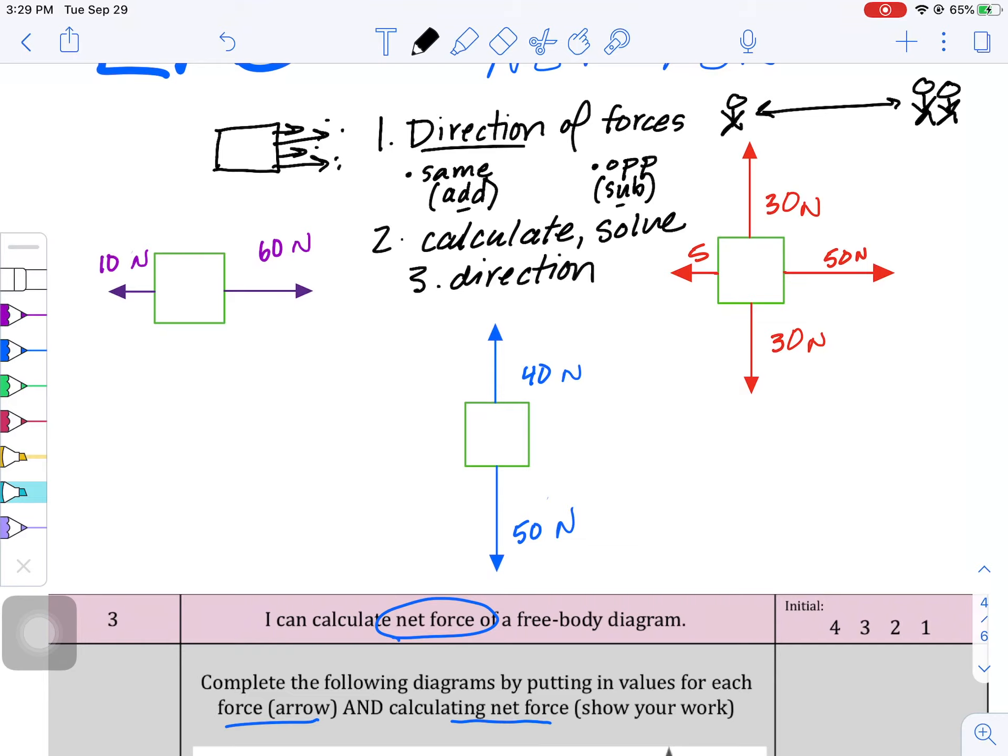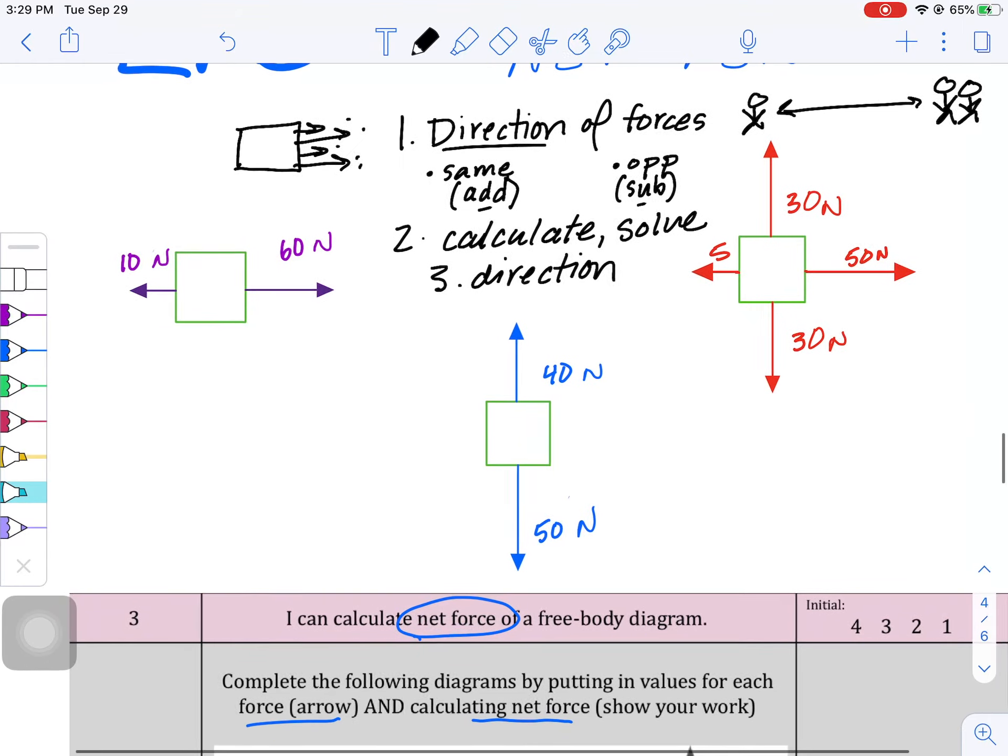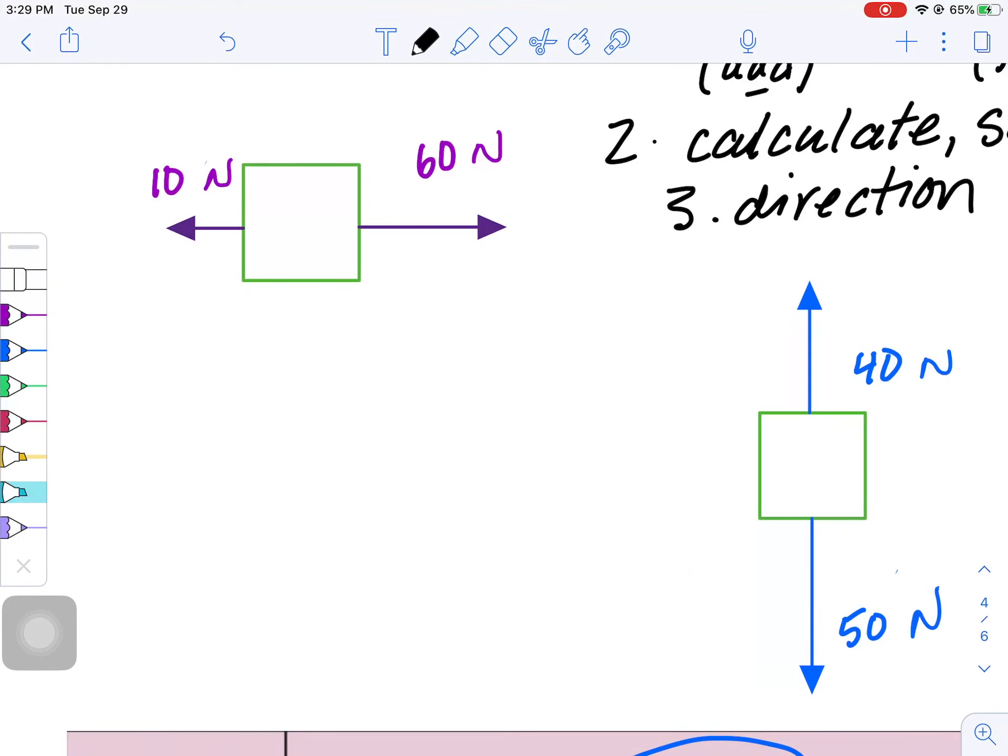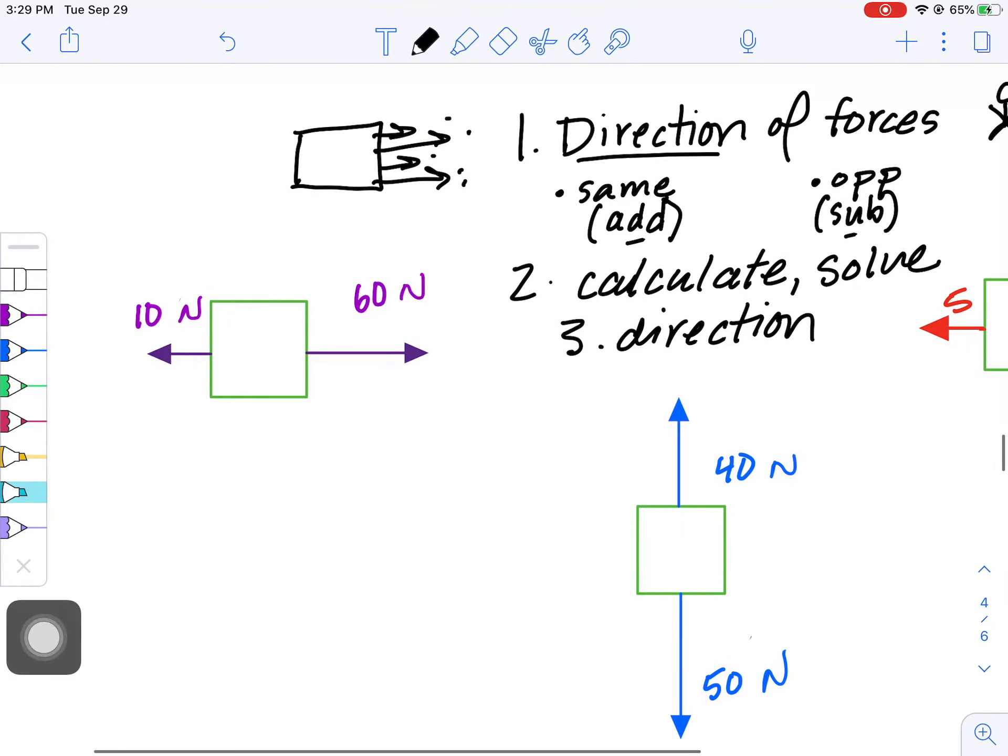And then the third piece is figuring out the direction that object is moving, if at all. And so, you'll see what happens when we get there. So, here's our three examples we're going to go through today. This one here, we're going to start out with. So, let's get our directions in here. The first thing we want to do is look at the direction of the forces. Same or opposite. So, if you want to try to solve this on your own, now would be a good time to pause. And then check back here in a minute.